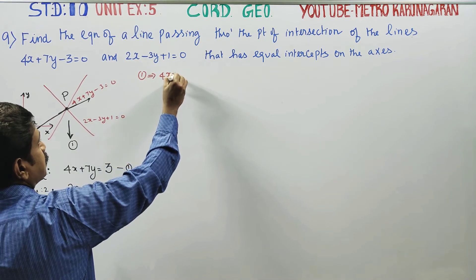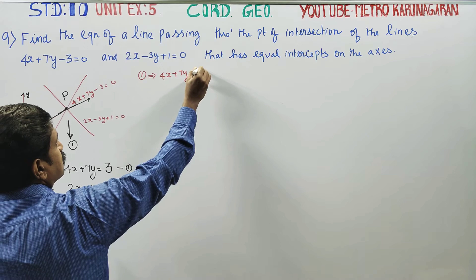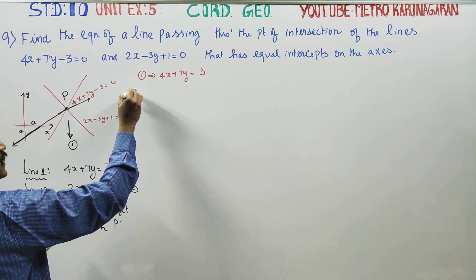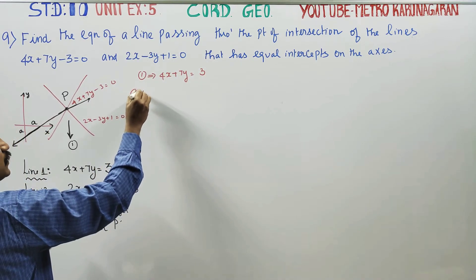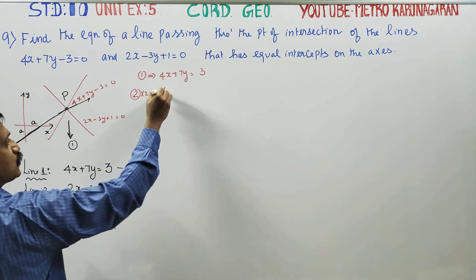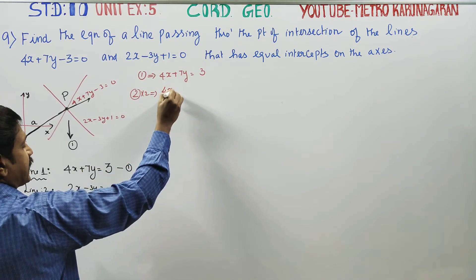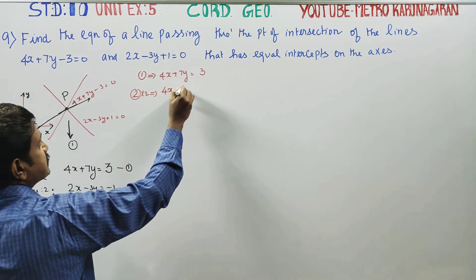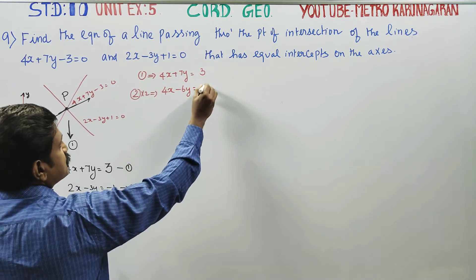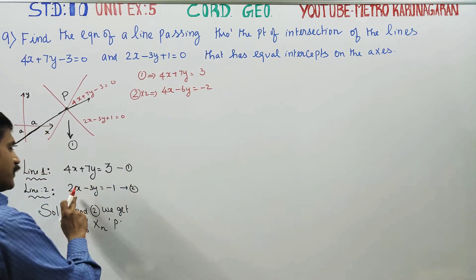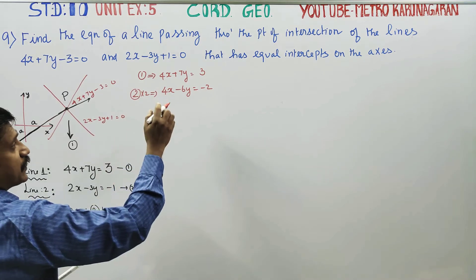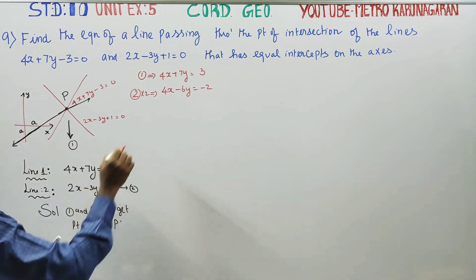Equation 1 is 4x plus 7y equals 3. For equation 2, multiply all terms by 2: we get 4x minus 6y equals minus 2. Now cancel the 4x terms.